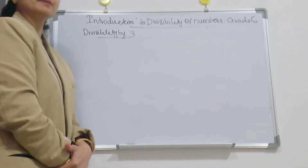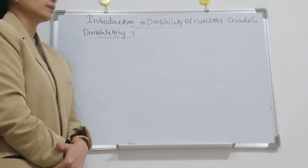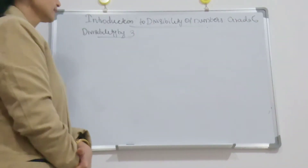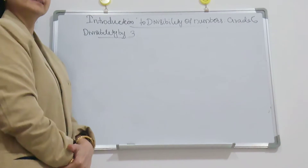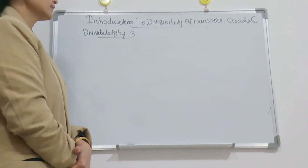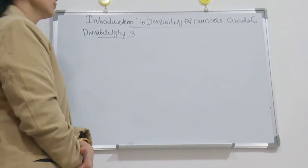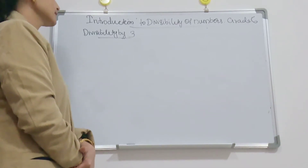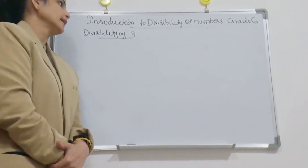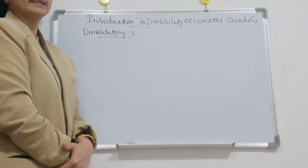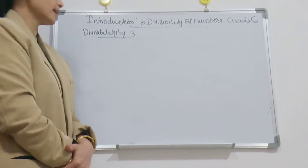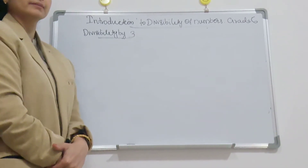Hi students, welcome to Complete Solutions for Maths. Today we are going to discuss the divisibility rule of numbers — divisibility by 3 and divisibility by 9.